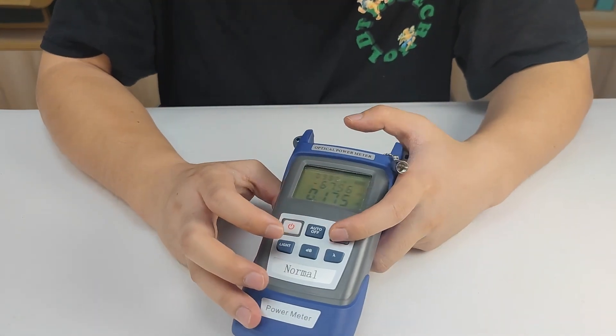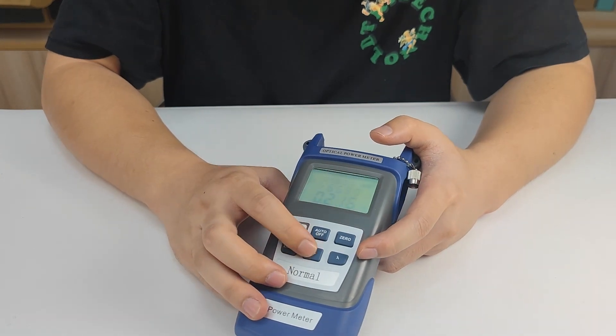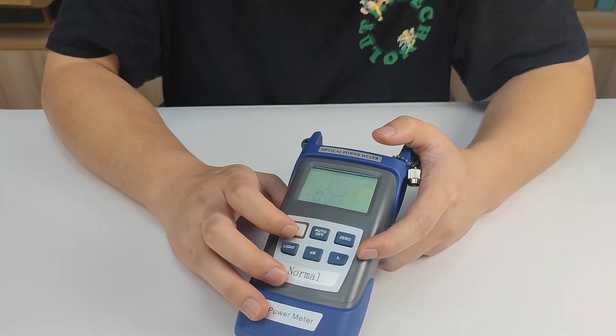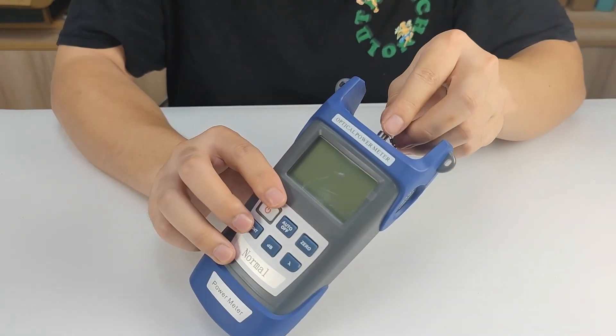The buttons on the panel are power, automatic shutdown, calibration, diamond, power adjustment, and wavelength adjustment.